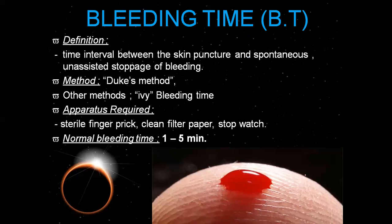Bleeding time is the time interval between the skin puncture and the spontaneous, unassisted stoppage of bleeding. If you have punctured your skin and then, unassisted, you experience spontaneous stoppage of the blood — that interval is the bleeding time.